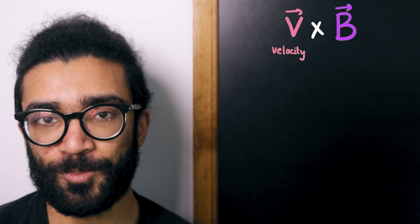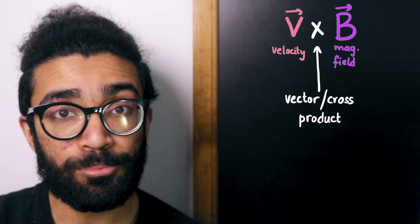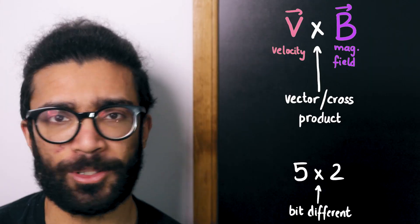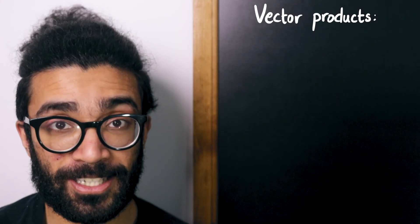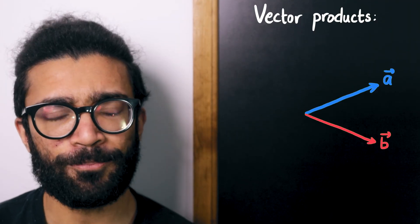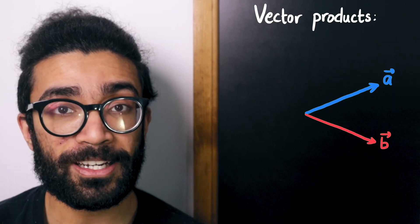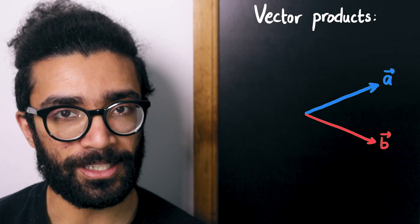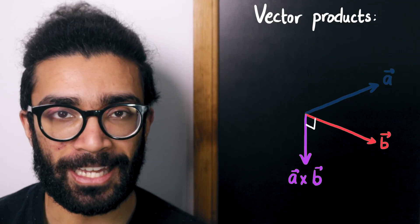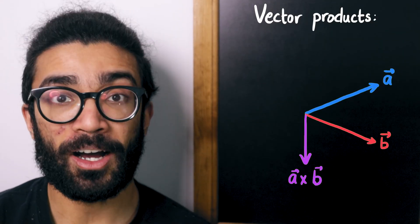V is the velocity of our particle, which is a vector. B is the magnetic field, which is also a vector. What we're finding here is the vector product or cross product between these two — it's not just a simple multiplication like between two numbers. For those unfamiliar with vector products, this is how they work: if we take two random vectors A and B, and we want to find the vector product A cross B between them, then the end result is going to be another vector that is perpendicular to both A and B, and whose size and direction depends on how well A and B are aligned with each other.